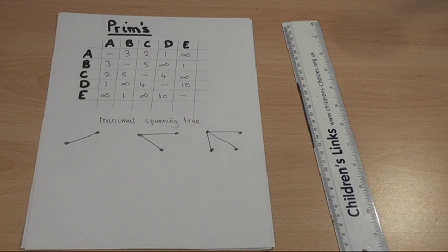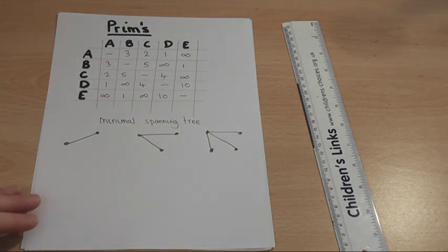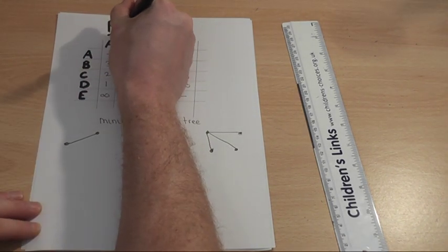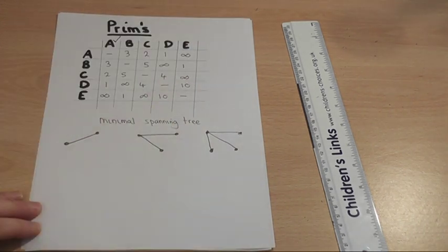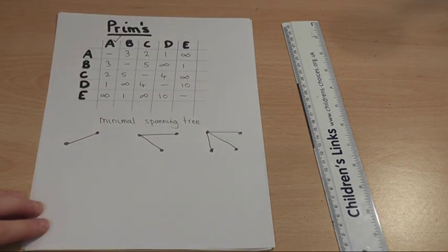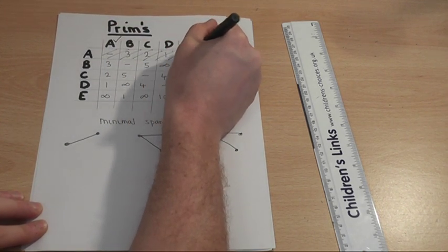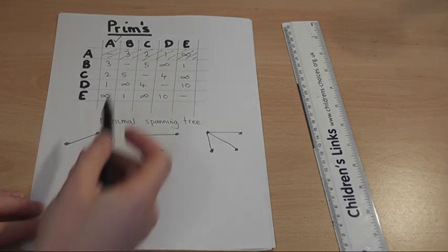We begin by choosing what's called an arbitrary node, though often in the exam they will give you which node to start on. We're going to start on node A, so we're going to place node A into the network.